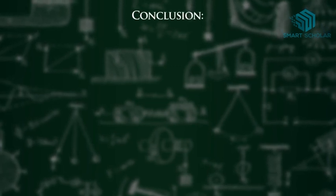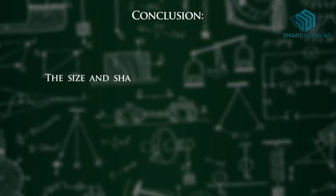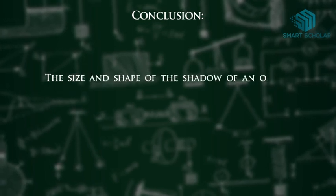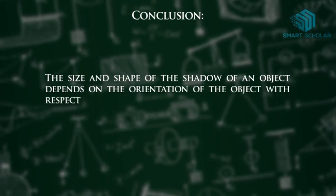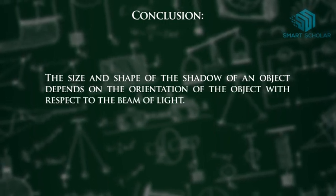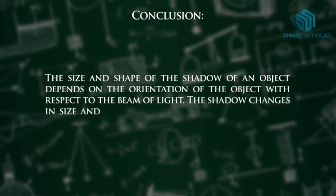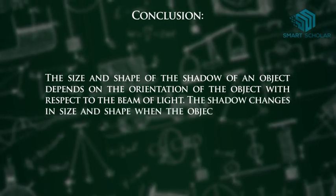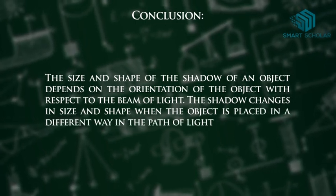Now, we get to the conclusion that the size and shape of the shadow of an object depends on the orientation of the object with respect to the beam of light. The shadow changes in size and shape when the object is placed at a different distance in the path of light.